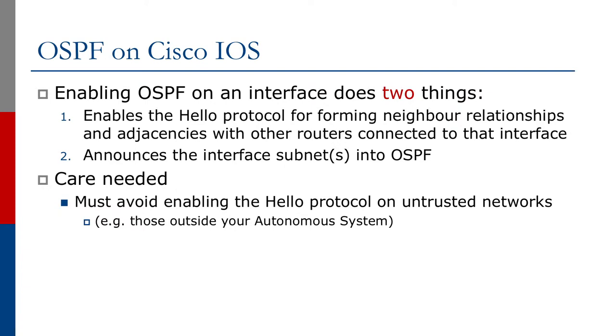The last thing we want is to establish OSPF with an external peer, upstream provider, or worse, one of our customers. On Cisco IOS, enabling OSPF on an interface does two things: it enables the hello protocol to form neighbor relationships and adjacencies, and it announces the interface subnets into OSPF. We must avoid enabling the hello protocol on untrusted networks — those outside of your autonomous system. This is industry best practice, but a frequent error. In many cases on public infrastructure, operators leak internal OSPF or try to find adjacencies with outside infrastructure. The 'I' in IGP means interior, and it's critical to remember this when deploying OSPF.